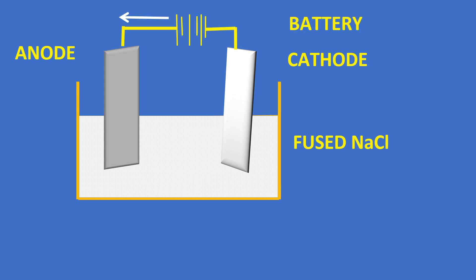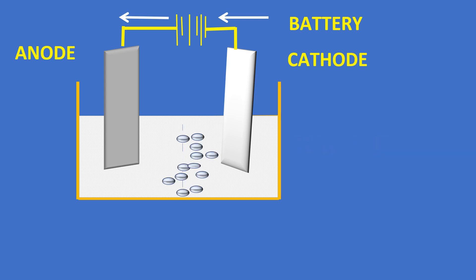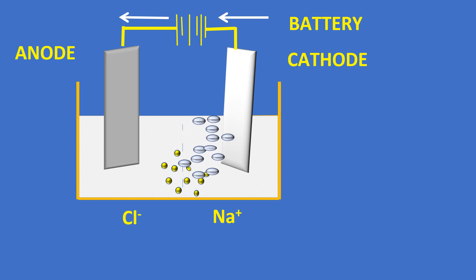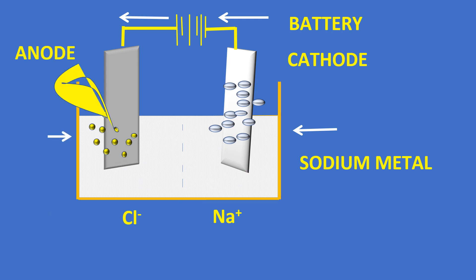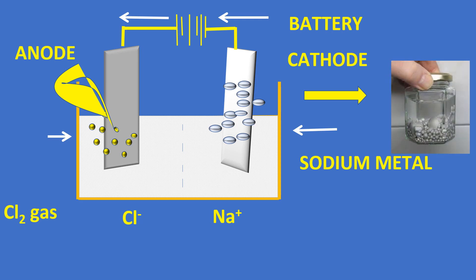After passing electricity, fused NaCl will be dissociated into sodium ions and chloride ions. Sodium metal will be deposited at the cathode, and chlorine gas is liberated at the anode. The deposited sodium metal is collected for various applications.